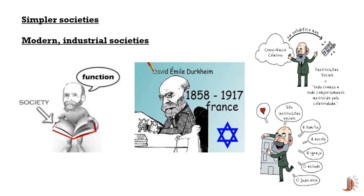In modern industrial societies, division of labor becomes more specialized, with individuals occupying diverse roles and performing distinct tasks. This specialization arises from the increasing interdependence among individuals, where each person relies on others for goods, services, and support.